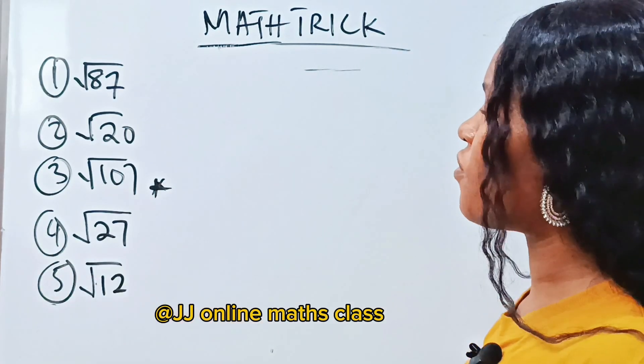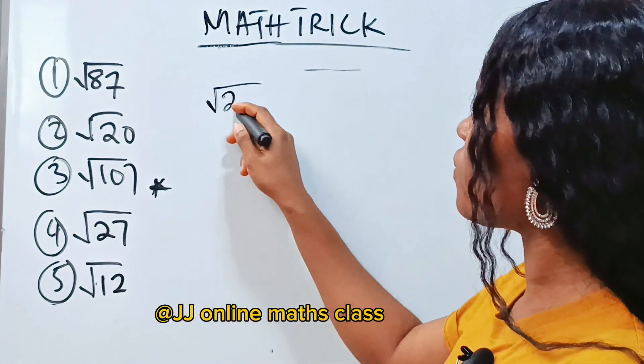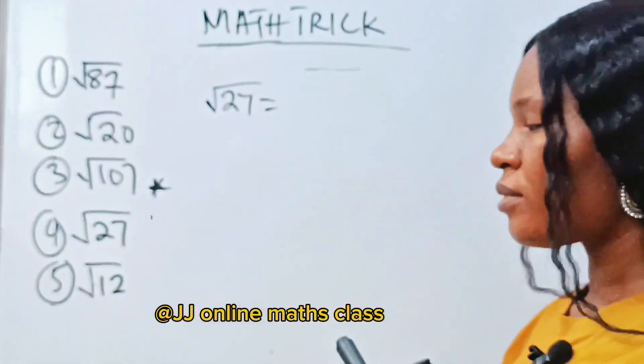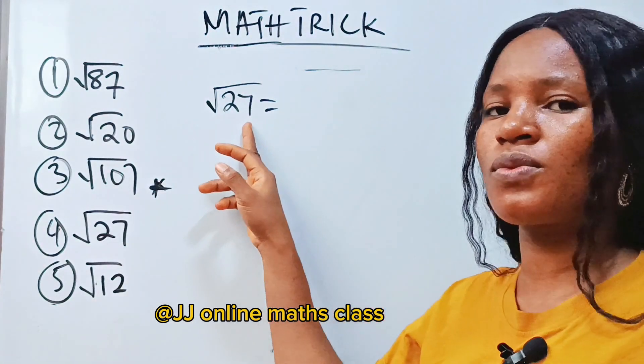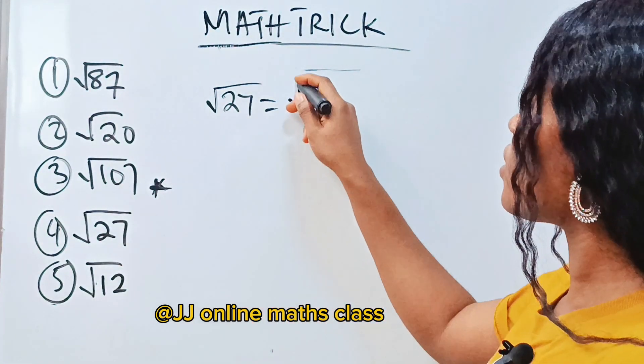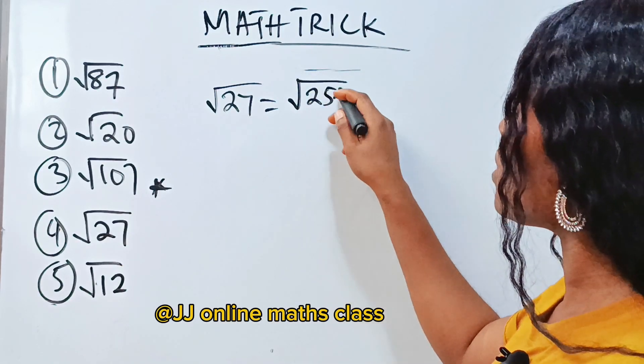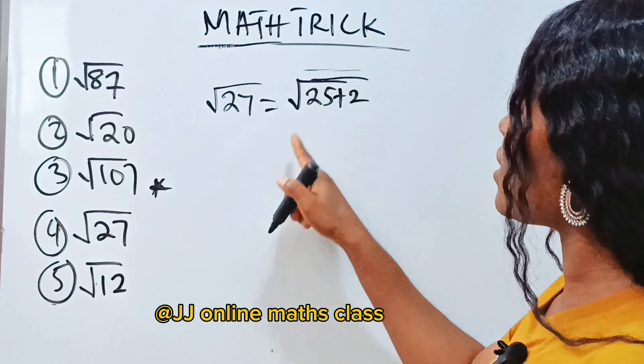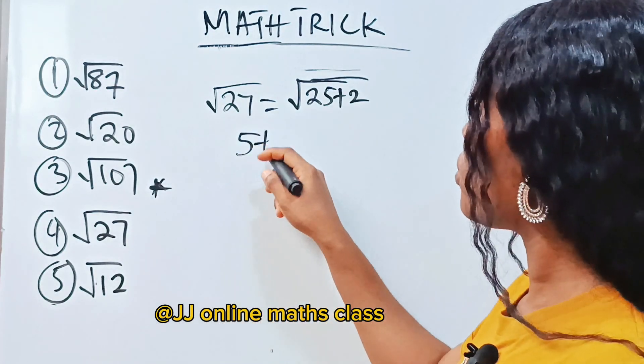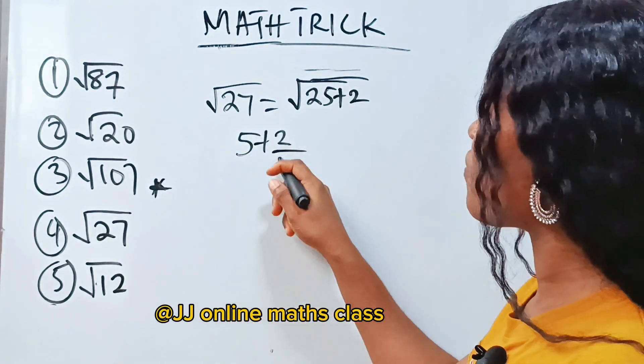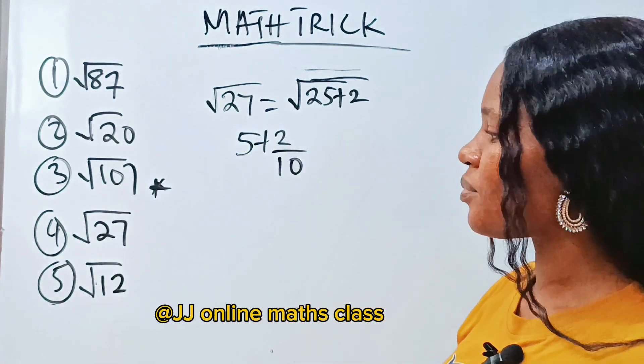All right, let's do number 4, which is square root of 27. Now the closest square to this 27 is what? 25. So it's what? 25 plus 2. All right, now what is square root of 25? That is 5. Plus 2 over double of 5 is what? 10.